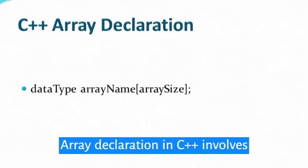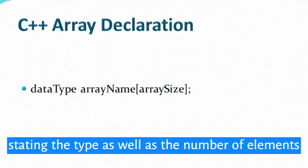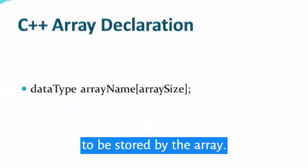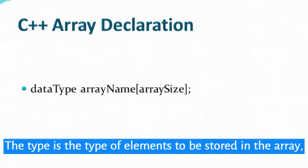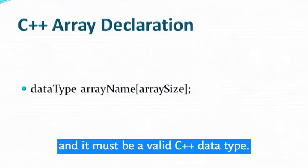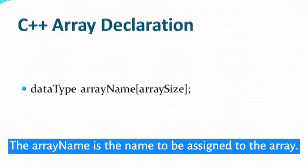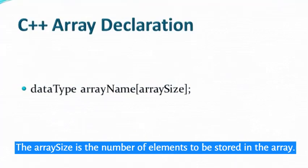Array declaration in C++ involves stating the type as well as the number of elements to be stored by the array. The type is the type of elements to be stored in the array, and it must be a valid C++ data type. The array name is the name to be assigned to the array. The array size is the number of elements to be stored in the array.